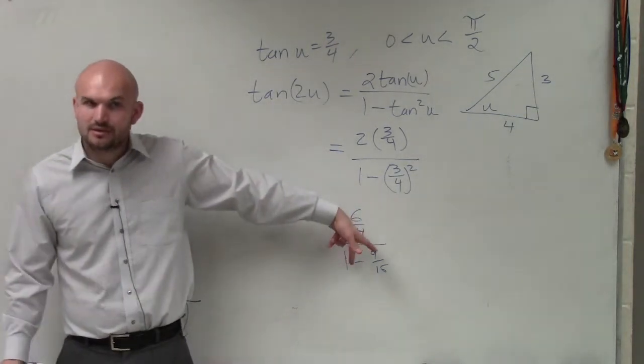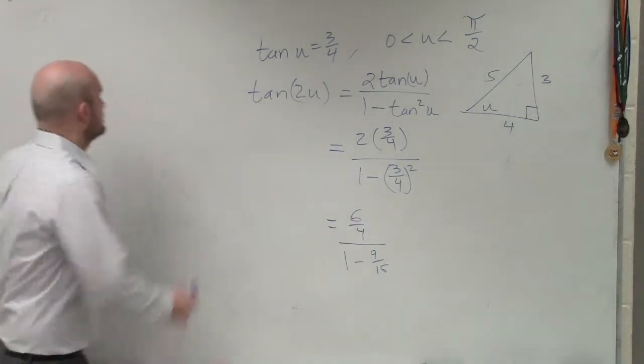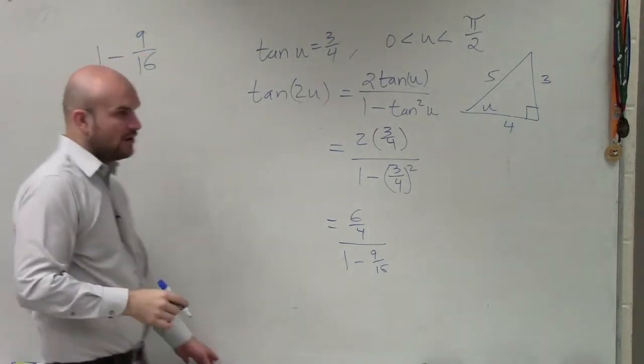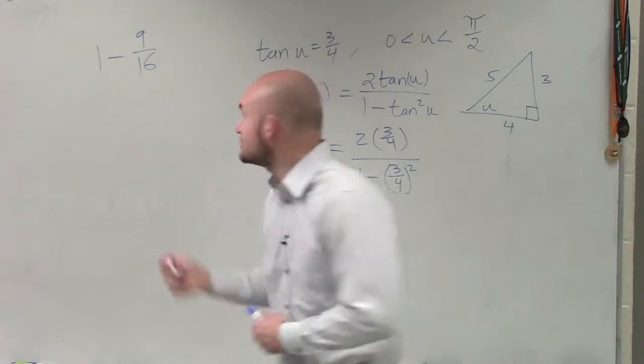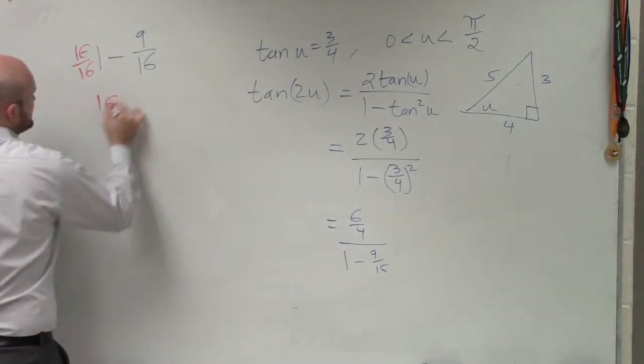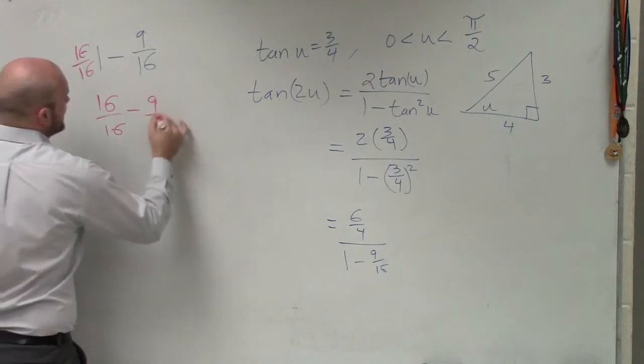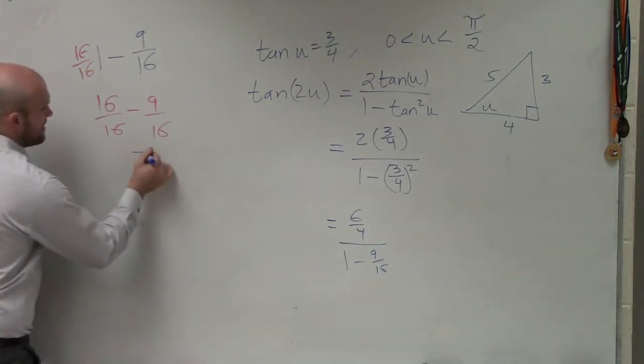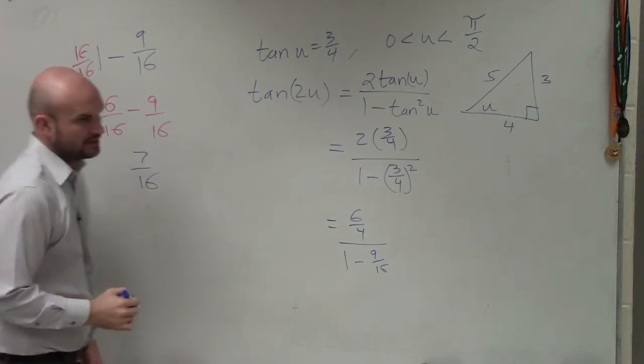Now, I want to combine these. So to combine these, 1 minus 9 over 16. Guys, you know 1 is - you got to have common denominators. So you multiply by 16 over 16 on the left side. So you have 16 over 16 minus 9 over 16, which is now going to give us 7 over 16.